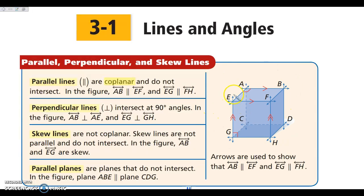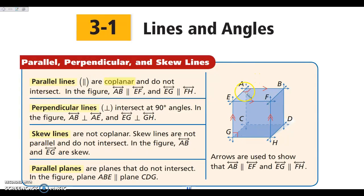If we look at our figure, EG is parallel to FH, EG is also parallel to BD, and EG is also parallel to AC. All four of those lines are running vertically and I can draw one plane through any two of them.